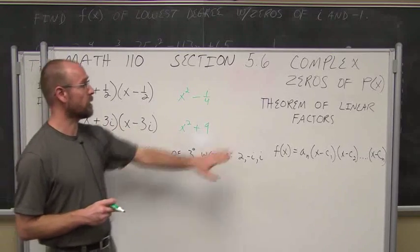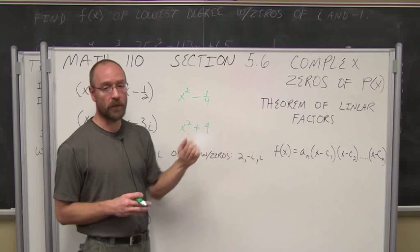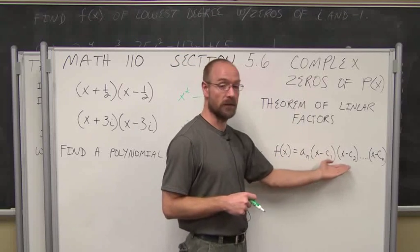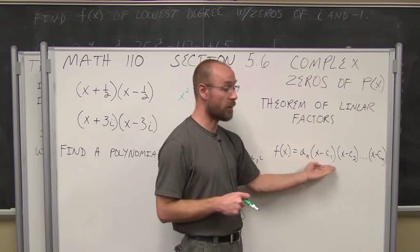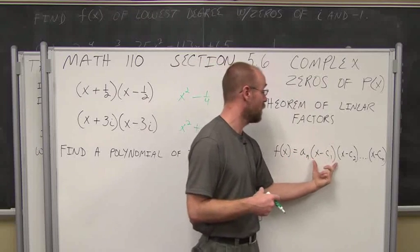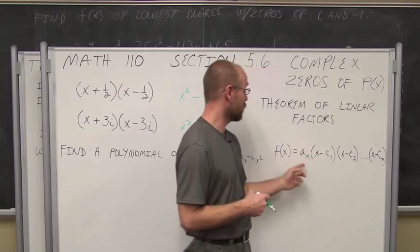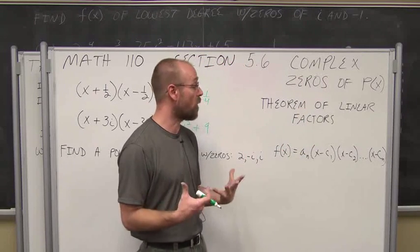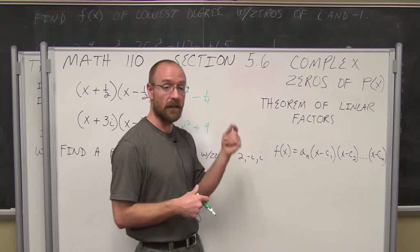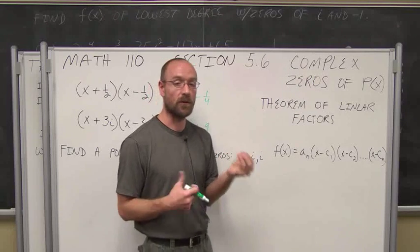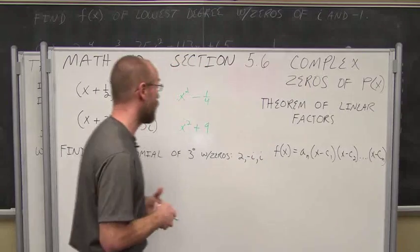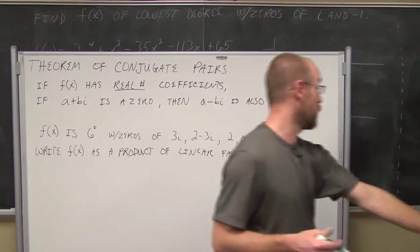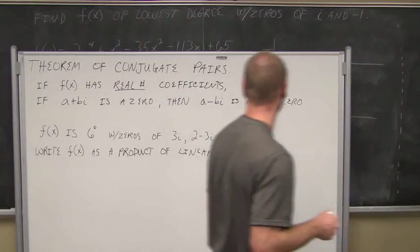Before we move on, let's look at the theorem of linear factors. If we have a polynomial with real number coefficients, it can be written as a product of linear factors — product just means multiplication of linear factors. So if we have a polynomial of degree n, we can have n number of factors, because the highest degree of the polynomial is the number of solutions. In the complex number system, this tells us we will find that many solutions, whether they be real or complex.